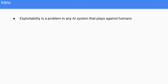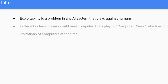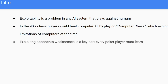Exploitability is a problem in any AI system that plays against humans. For example, in the 90s, chess players would be able to beat top computer AI by playing something they called computer chess, which exploited some of the limitations in the memory of computers at that time. Exploitability is actually a bigger problem in poker because exploiting opponent's weaknesses is actually a big part of what makes a good poker player.